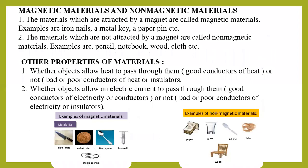Now there are other properties of materials on which we can classify objects. The first one is magnetic properties. As per this property, substances are divided into two groups: magnetic materials and non-magnetic materials. The materials which are attracted by a magnet are called magnetic materials — for example, iron nails, a metal key, a paper pin, etc. The materials which are not attracted by a magnet are called non-magnetic materials — examples are pencil, notebook, wood, cloth, etc.